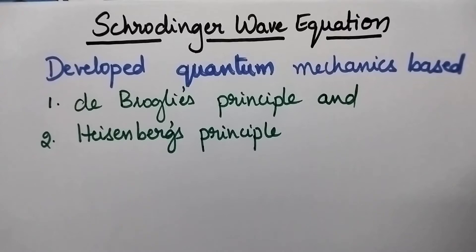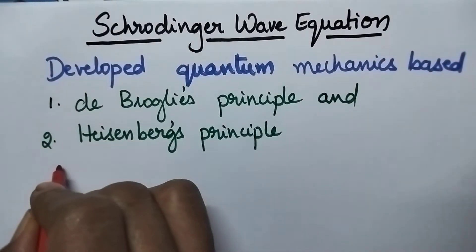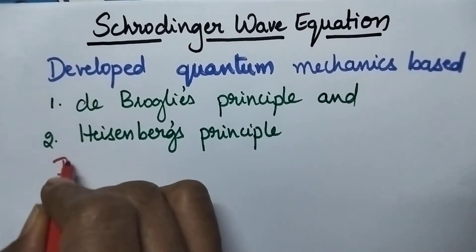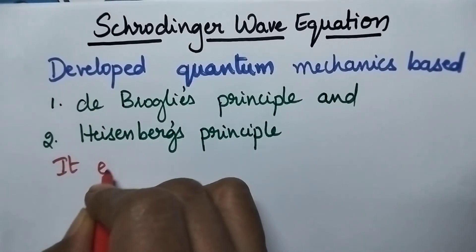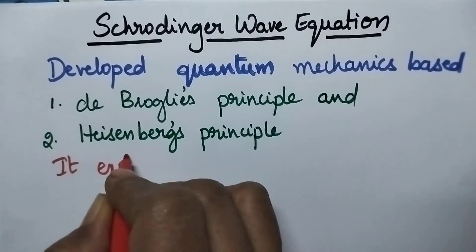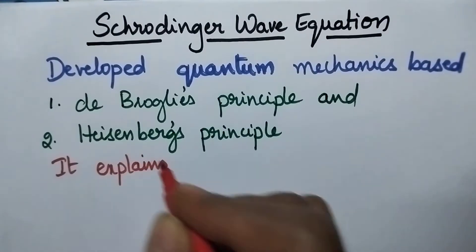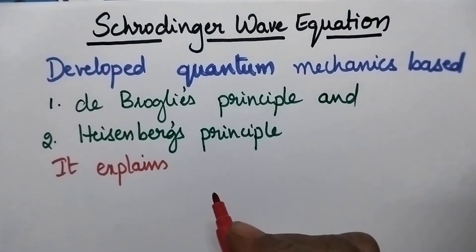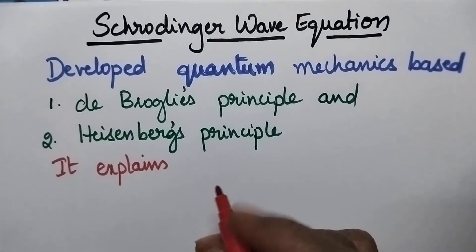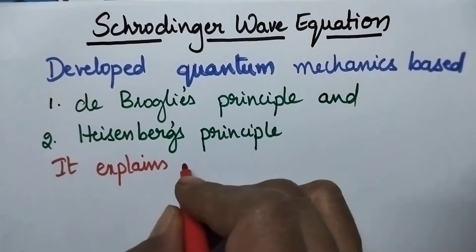Coming to the importance of the Schrödinger wave equation, it explains the wave motion of an electron.